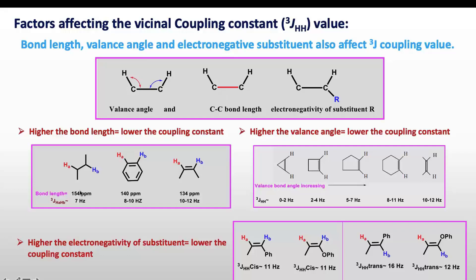For different bond types: the C-C single bond length between unsaturated carbons is 154 pm, giving a coupling constant of around 7 Hz. In a benzene ring the bond length is 140 pm, so the coupling constant increases to 8 to 10 Hz. For an alkene the bond length is 134 pm, giving a coupling constant of 10 to 12 Hz. As bond length decreases the coupling constant value increases.